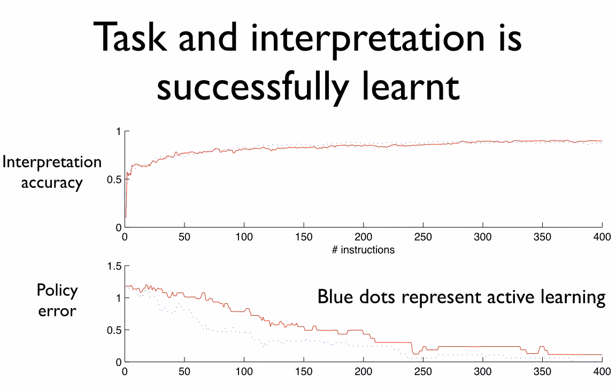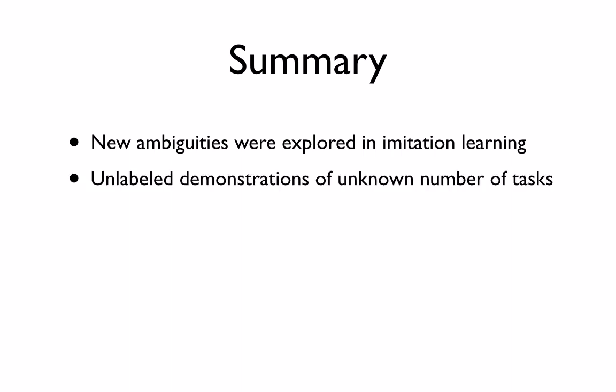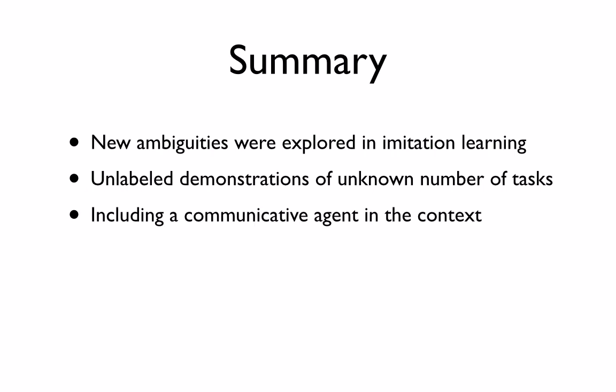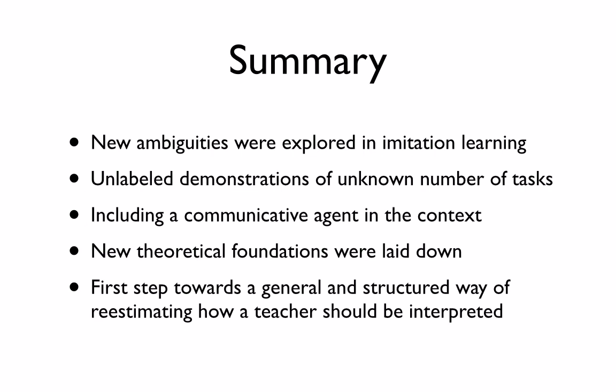In summary, new ambiguities were explored in imitation learning: unlabeled demonstrations of an unknown number of tasks; inclusion of a communicating agent in the context, thereby expanding imitation learning and relaxing a hidden assumption of much language learning research. New theoretical foundations were laid down, and hopefully the first steps towards a general and structured way of re-estimating how a teacher should be interpreted were taken.